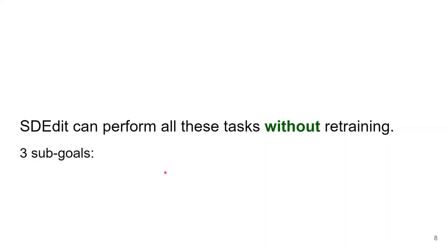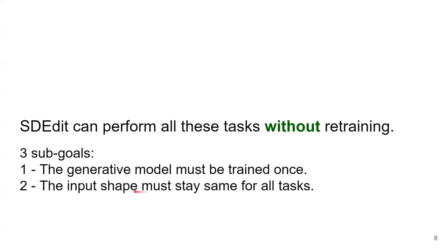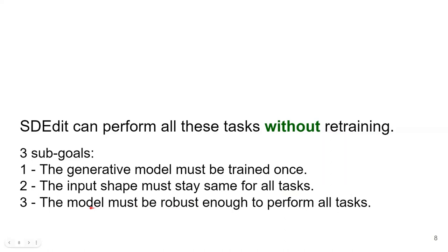What SDEdit offers is that it can perform all of these tasks without retraining. There are actually three sub-goals SDEdit is achieving: first, the generative model is trained only once; second, the input is modeled so that the input shape stays the same for all three tasks; and third, the model must be robust enough to perform all these tasks.